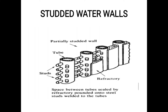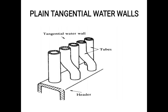The purpose of these studs is to prevent the refractory side and the furnace wall from overheating. In some designs there is refractory behind the studs, and in other designs the refractory is placed on top of the studs — meaning studs are made first and then filled with refractory. Both designs exist for studded water walls.